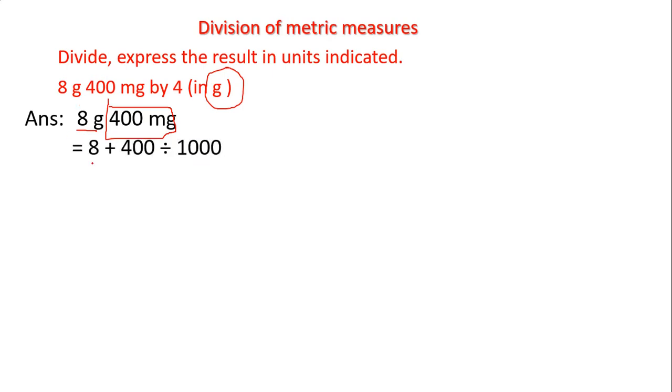Then plus, after that we have to convert this 400 milligrams to grams. To convert 400 milligrams to grams, we have to divide by 1000, because 1000 milligrams equals 1 gram and we are converting from lower unit to higher unit.